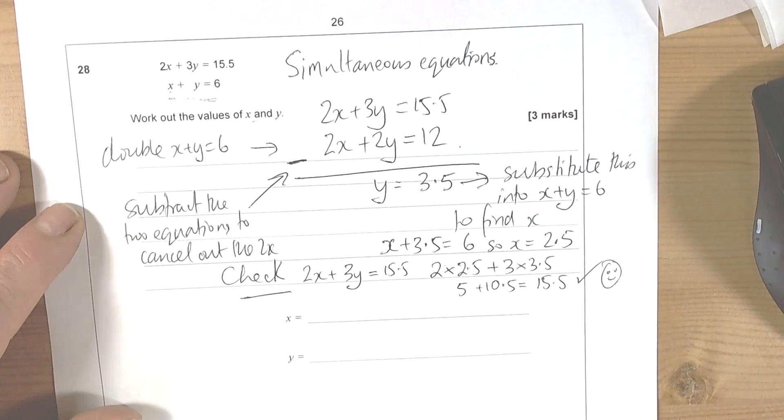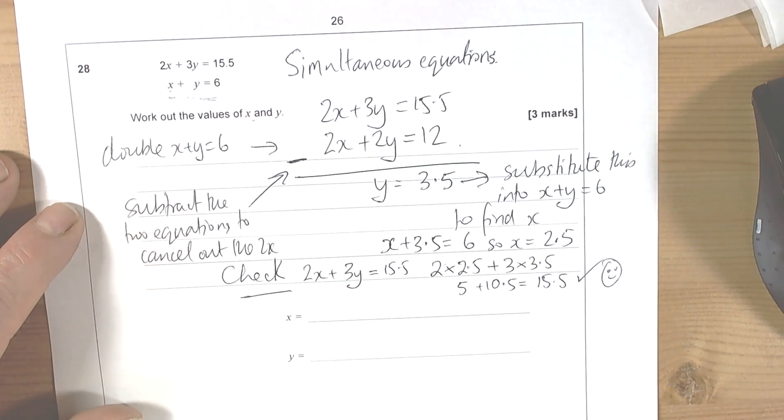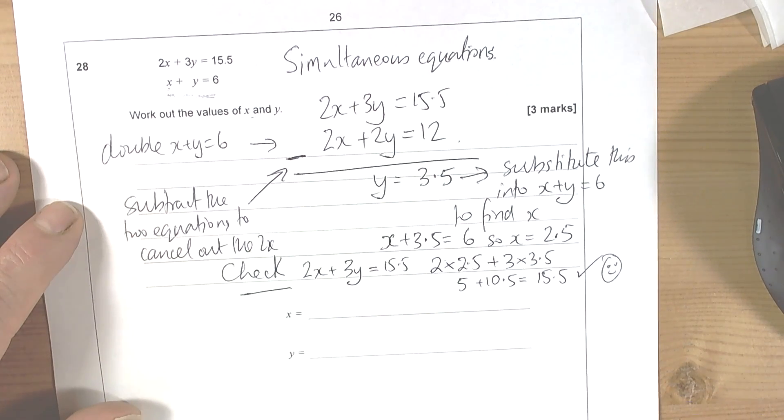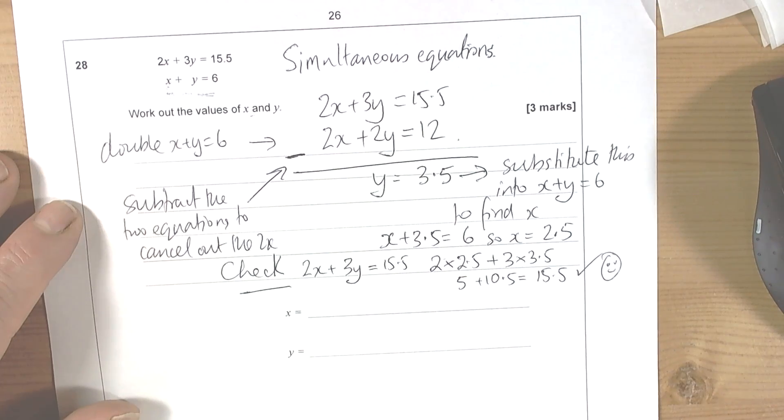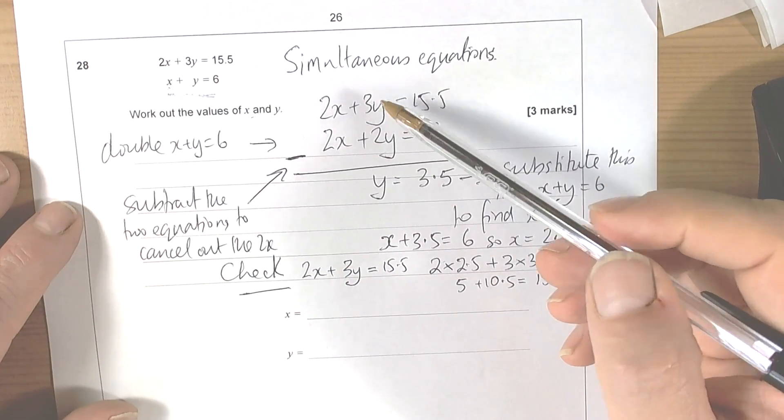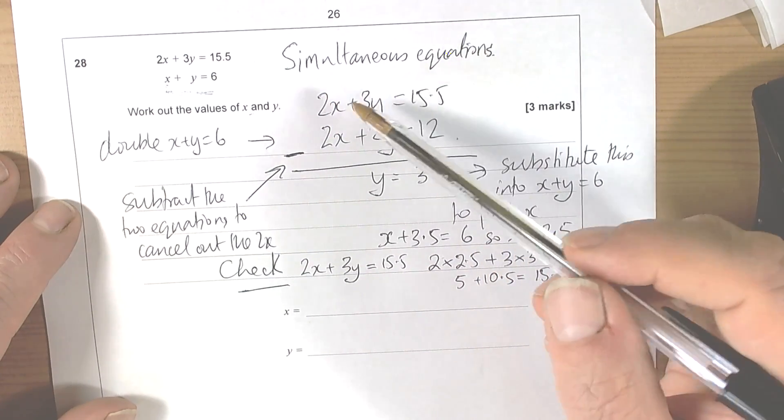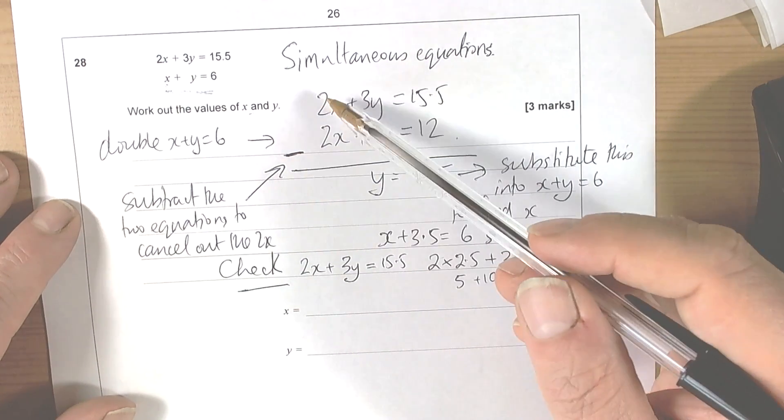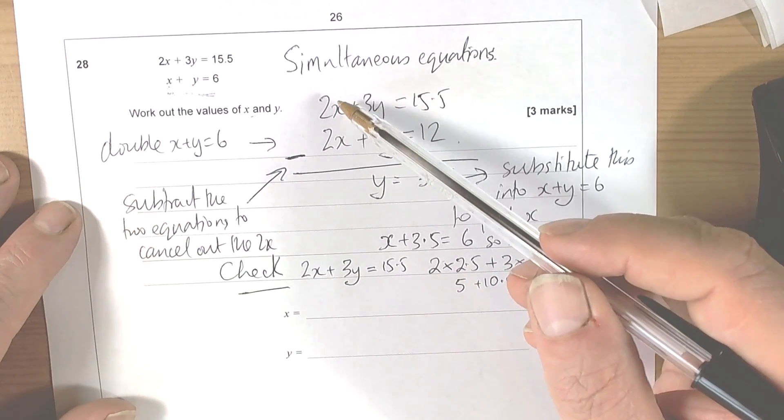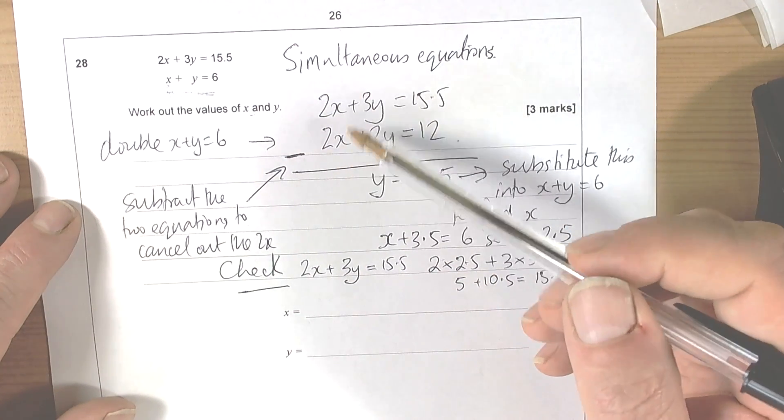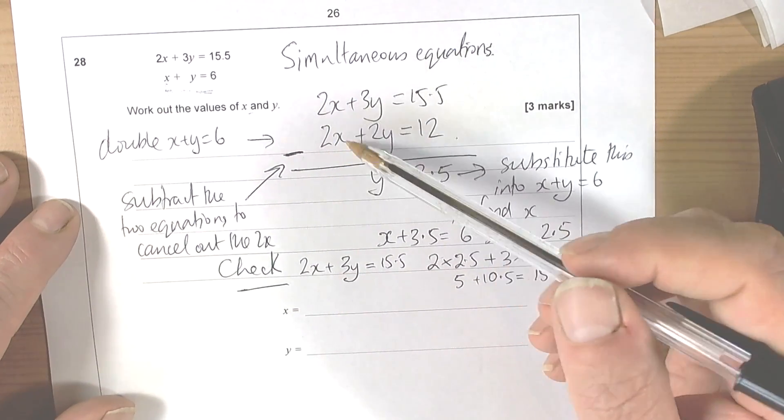So when you're doing simultaneous equations, the key idea is to make one of the equations change—sometimes you'll change both of them—to give you the same value of x's or y's or whatever the letters are in the question. But you're going to create two equations with the same number of x's or the same number of y's in, such that you can then add the equations or subtract them, whichever way it has to be, to then cancel out the letter that you had the same coefficient in front of it.